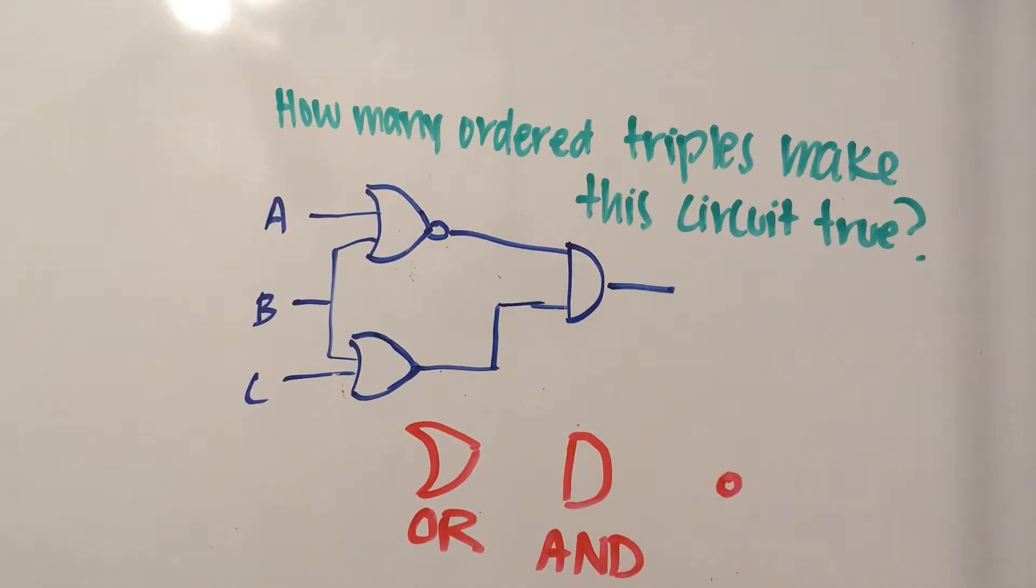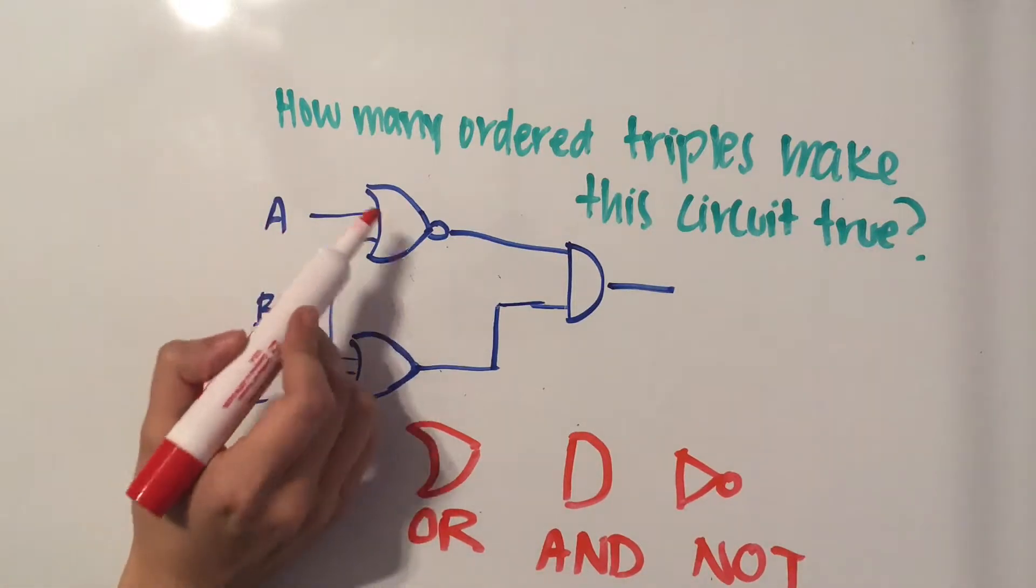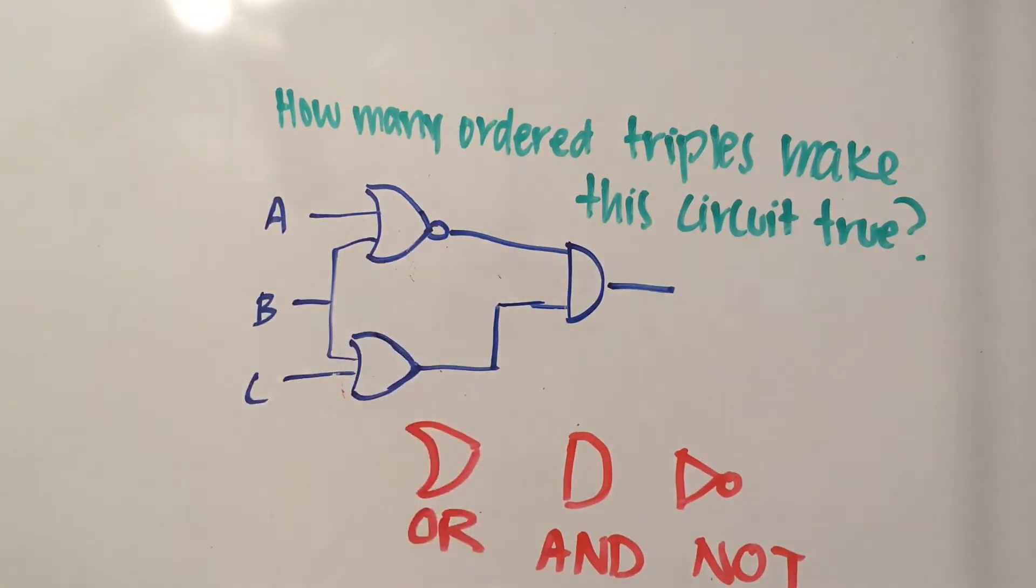And then we have a little dot which is NOT. You can also have a triangle in front of that. So as you can see here, we have an OR gate with a little dot, which means NOT.